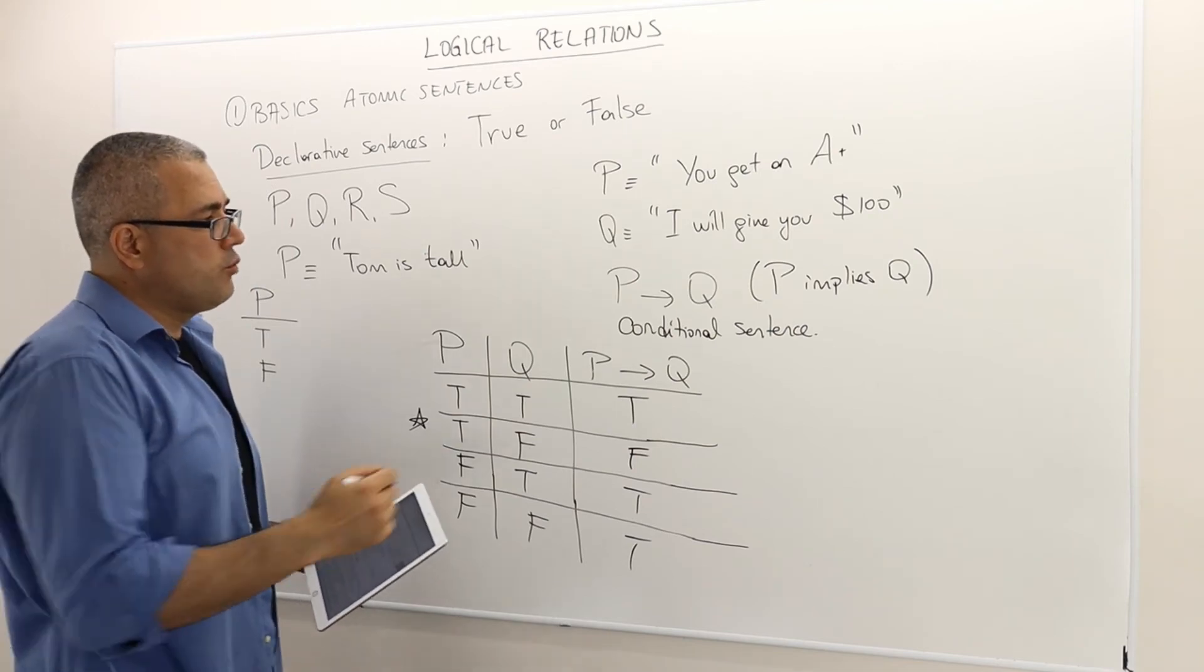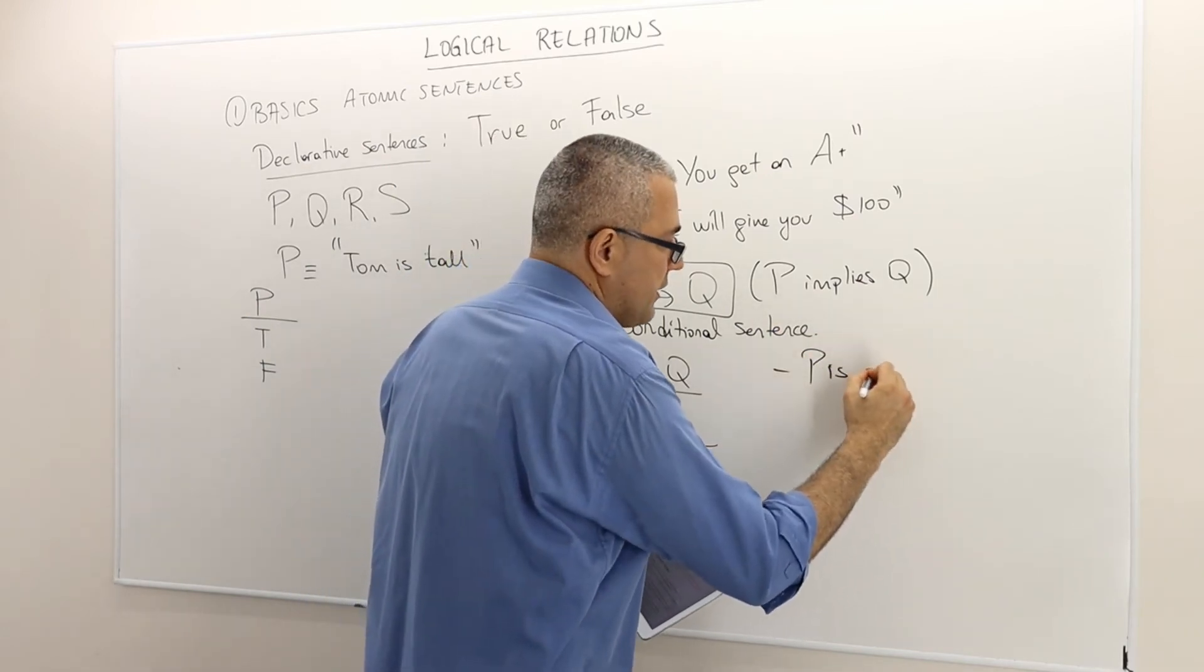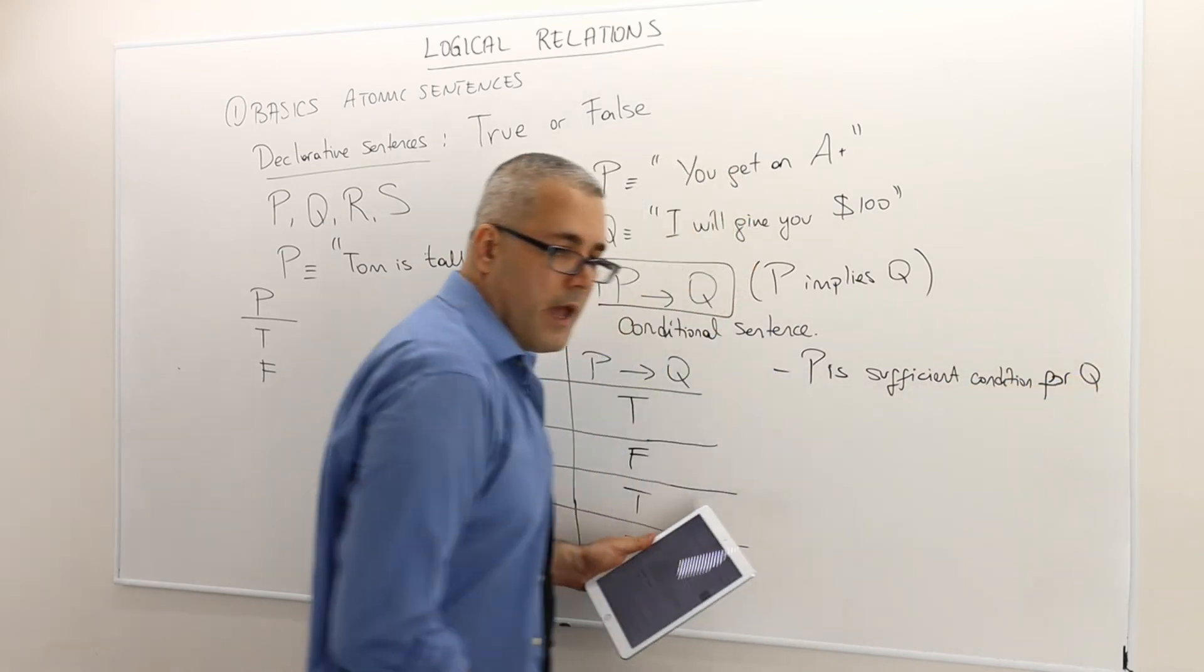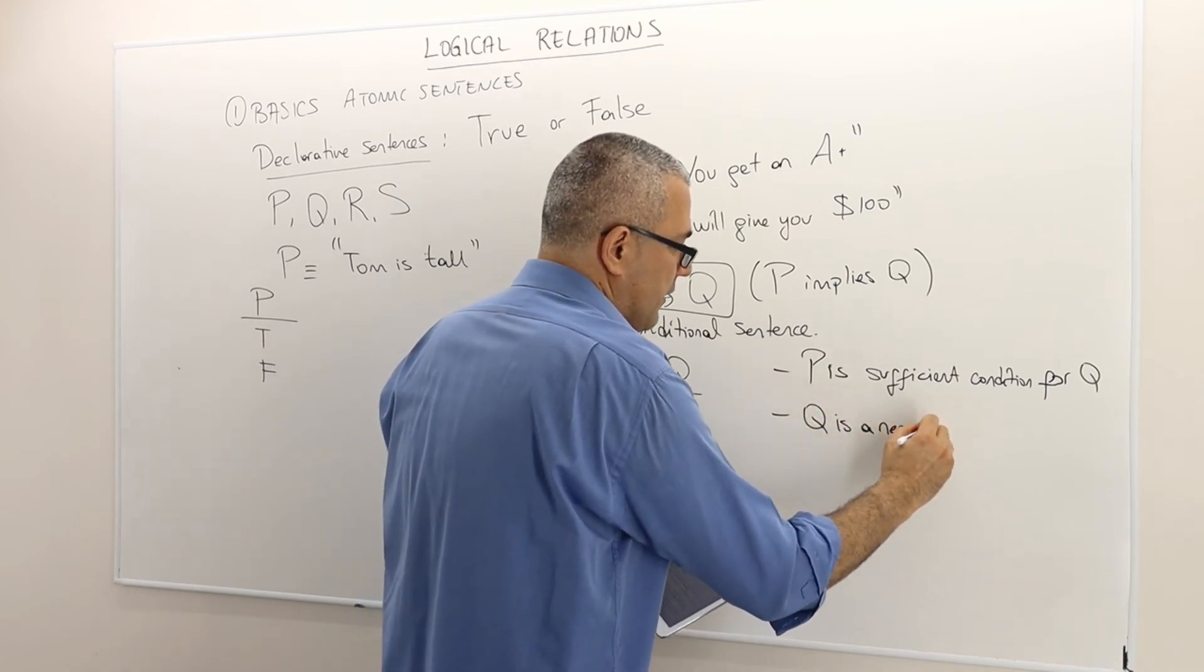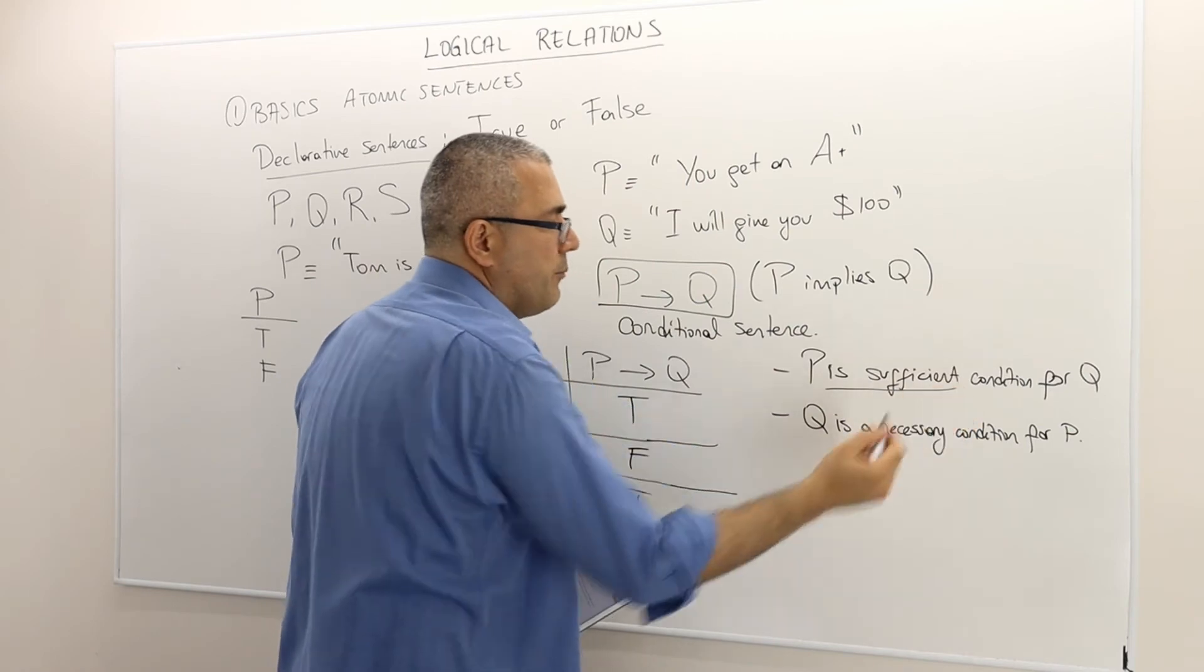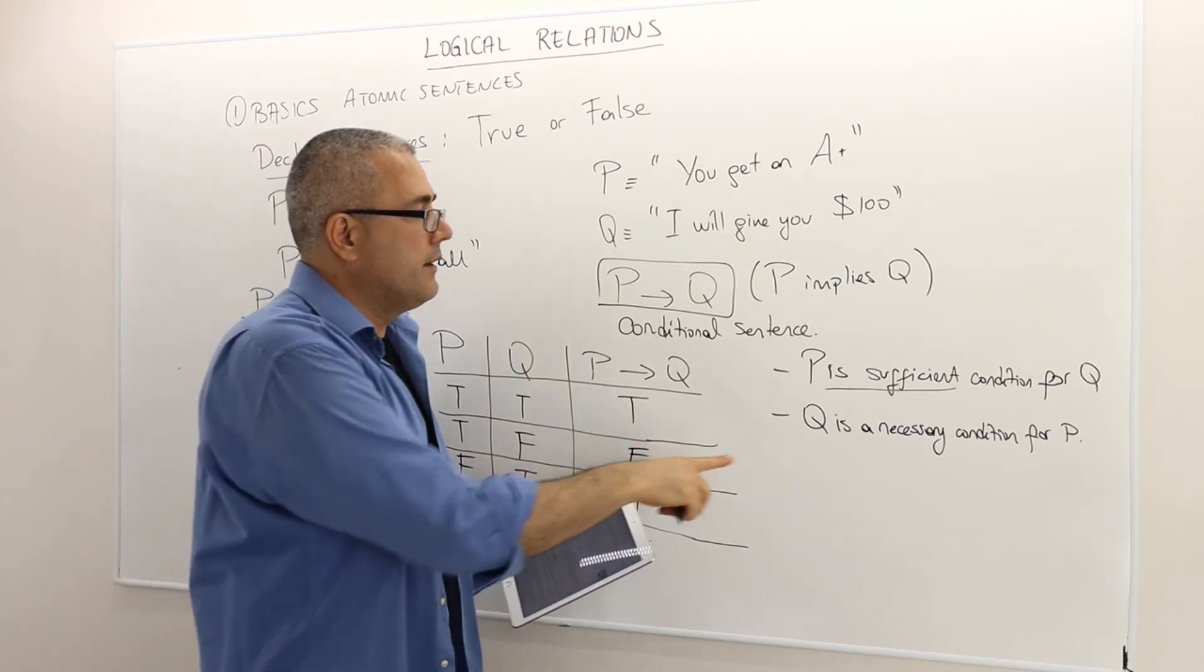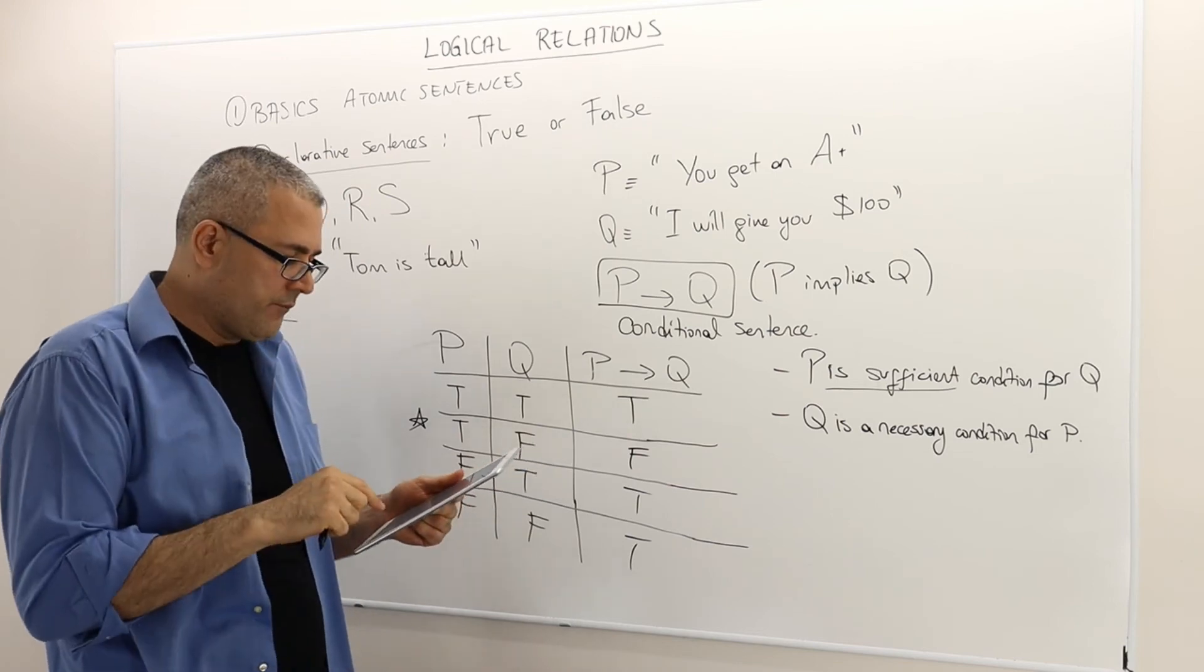So sometimes when we write P implies Q, we also read it as follows: P is sufficient condition for Q. And we also say equivalently, Q is a necessary condition for P. The first one, P is sufficient condition for Q, that means if P holds, it's sufficient enough, then Q must be true. And Q is necessary for P. So if Q doesn't hold, then P can't hold because it's necessary.